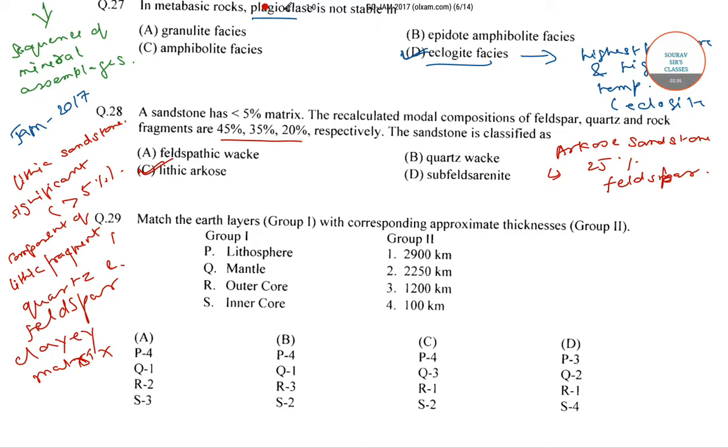As it contains significant, that is less than 5%, component of lithic fragment along with clay matrix and it has more than 25% of feldspar. So this sandstone is classified as lithic arkose.